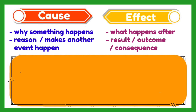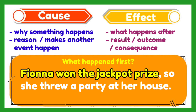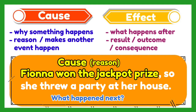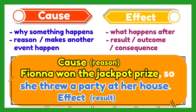Another example: Fiona won the jackpot prize, so she threw a party at her house. What happened first? Fiona won the jackpot prize — it is the reason why she threw a party. Therefore, this is the cause. What did Fiona do after that? She threw a party at her house. This is the result or the outcome. Therefore, this is the effect.